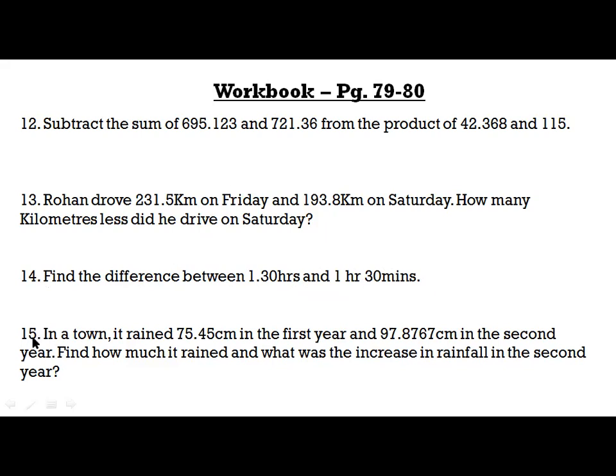Question 15: In a town, it rained 75.45 centimeters in the first year and 97.8767 centimeters in the second year. Find how much it rained in total, and what was the increase in rainfall in the second year.